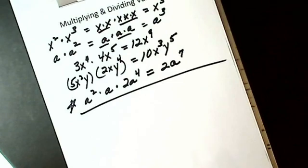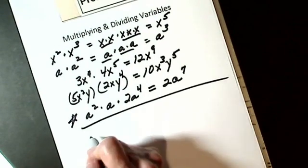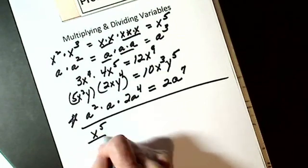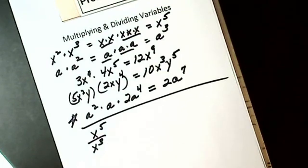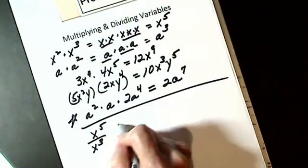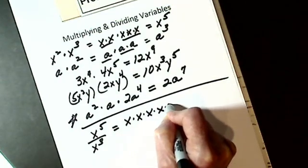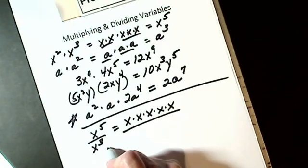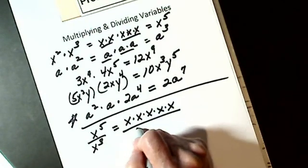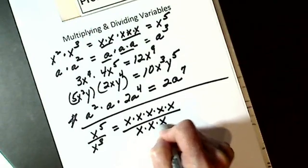Alright, we'll do division. Division is easy too. Let's say I have x to the fifth divided by x to the third. x to the fifth means I have x times itself 5 times.